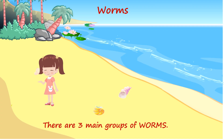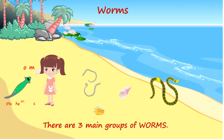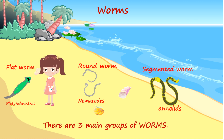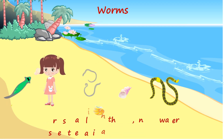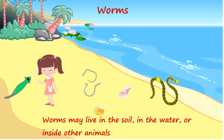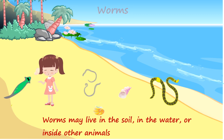Worms. There are three main groups of worms: flat worms, round worms, and segmented worms. Worms may live in the soil, in the water, or inside other animals.